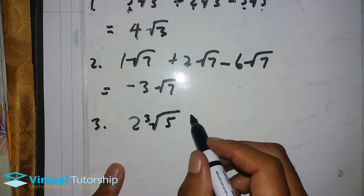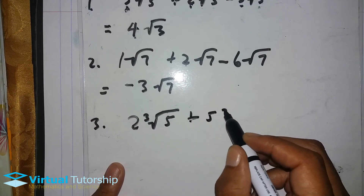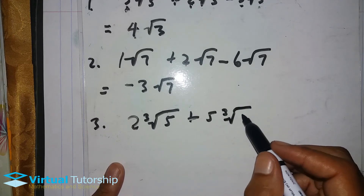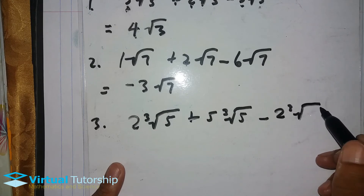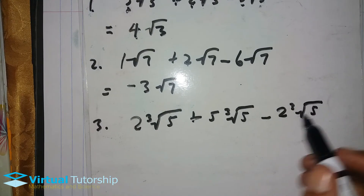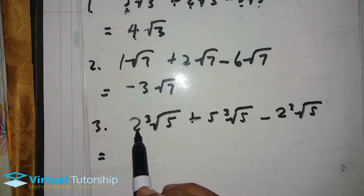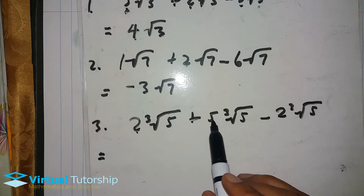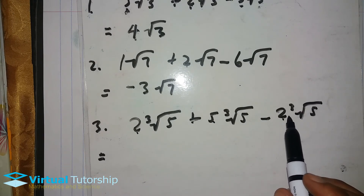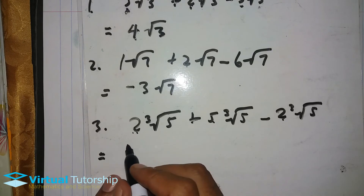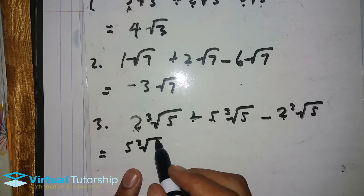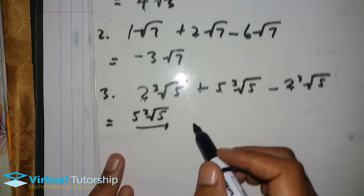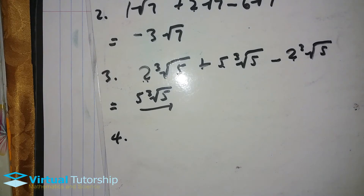Another example: 2√5 plus 5√5 minus 2√5 minus 2√5. So the coefficients are 2 plus 5 minus 2 minus 2, and the minus 2s cancel. That gives us 3√5.